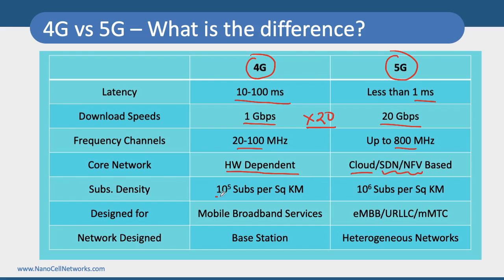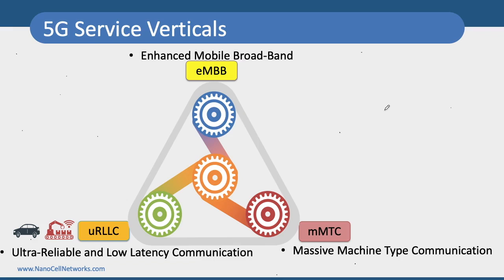The subscriber density, which is typically 100,000 subscribers per square kilometer in 4G, is going to be 10 to the power 6 — which is 1 million subscribers per square kilometer in 5G. Typically 4G networks were designed for mobile broadband services, however in 5G we have different service verticals defined: eMBB, URLLC, and mMTC. 5G networks are also going to be very densified, heterogeneous networks compared to the base-station-based 4G.